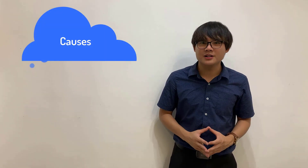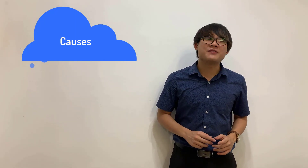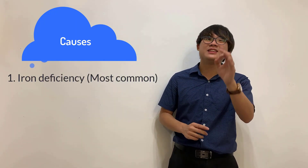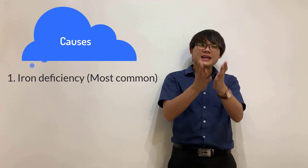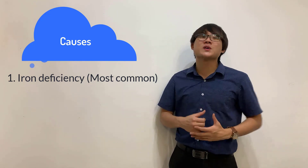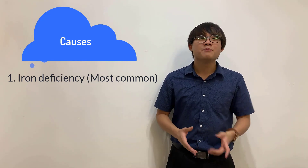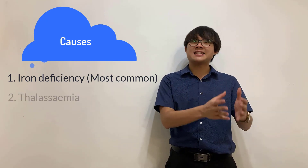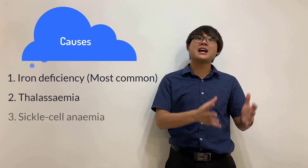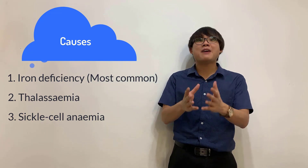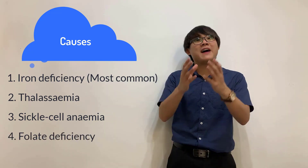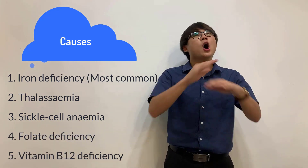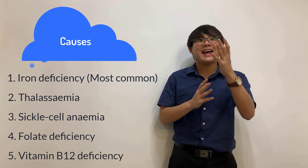For anemia, first of all, you must know some common causes of anemia. Generally, the most common cause of anemia is actually iron deficiency. But in your syllabus, there are other causes that can lead to anemia. For example, when we study genetics later on, we will have thalassemia, sickle cell anemia, folate deficiency, and vitamin B12 deficiency. All these can cause anemia.